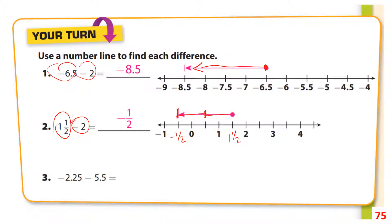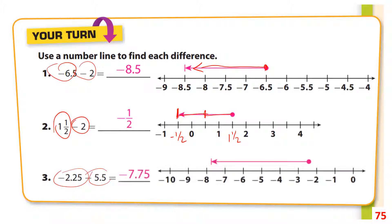On number three, you start at negative 2.25 and move to the left five and a half spaces on the number line, ending up at negative 7.75.